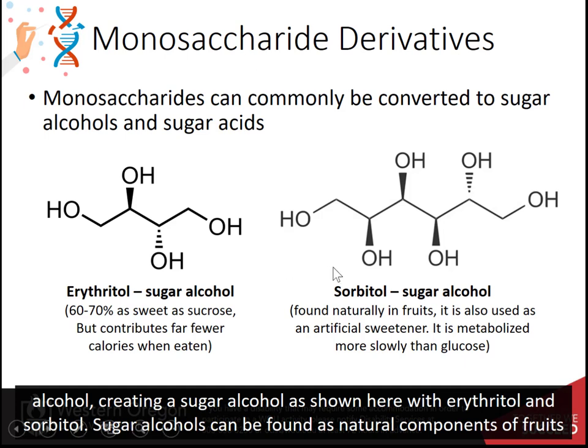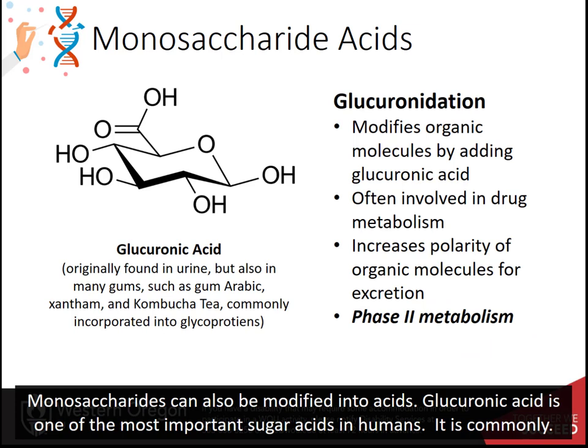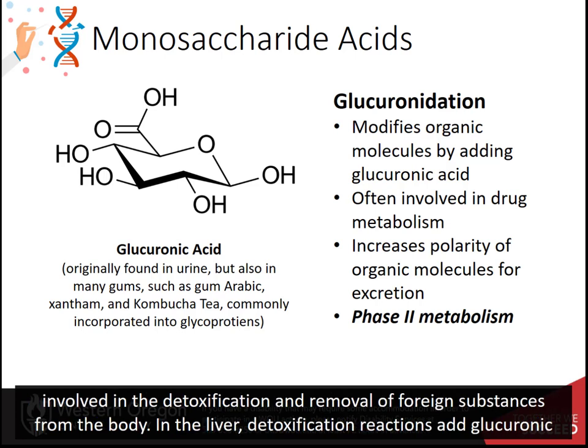Sugar alcohols can be found as natural components of fruits and are used as artificial sweeteners. Monosaccharides can also be modified into acids. Glucuronic acid is one of the most important sugar acids in humans.